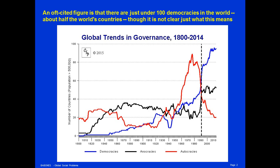Democracies here are charted in blue. You can see that at the beginning there was only one democracy, and until the 1840s the Polity project considered that there was only one real democracy in the world — the United States — and then many more democracies, first in Latin America, and then Europe and the rest of the world, joining the blue line to bring us up to somewhere in the mid-90s in number of democracies in the 2010s. You'll also see there are two other lines in this graph: anocracies and autocracies.